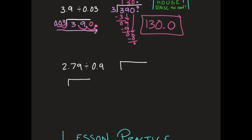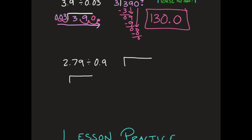Last problem we're going to practice today: I have 2 and 79 hundredths divided by 9 tenths. I'm going to go ahead and write it — 2 and 79 hundredths divided by 9 tenths. We've got our decimal on the side, so if our decimal is on the side, we let it slide. We moved it over one time on the outside, and then we also have to do that inside the house one time. I'm going to rewrite my problem: I have the whole number 9 on the outside, and 2 with my decimal point moved, giving me 27.9 on the inside.